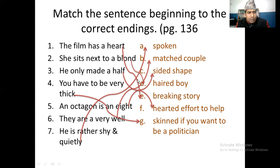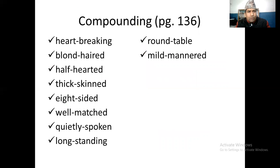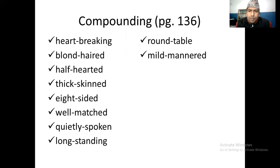You can do compounding words like: heartbreaking, blonde-haired, half-hearted, thick-skinned, eight-sided, well-matched, quietly-spoken, long-standing, round-table, mild-mannered. So these compound words you have to take care of.